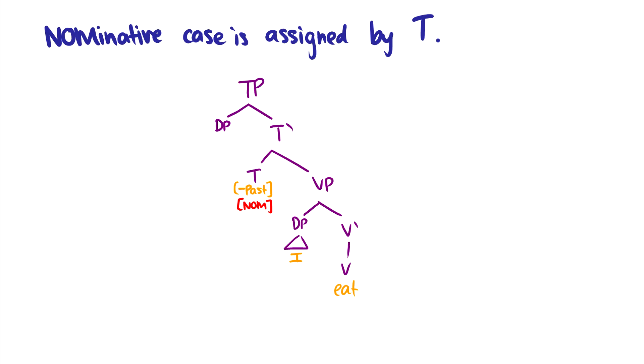Okay, so let's motivate movement a little bit more. Let's motivate it with case. So here we have that nominative case is assigned by T. So what do I mean here? Well, T has nominative case and it wants to give case to what's ever in the specifier of TP. So it wants to give nominative case to the thing in DP.